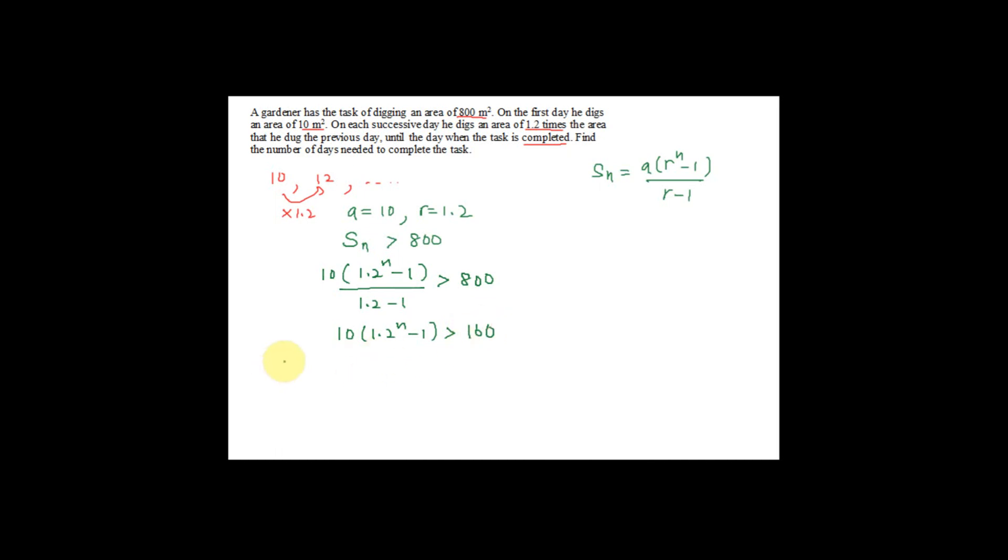So remember here you cannot multiply 10 with 1.2 power n. A lot of students are going to make a mistake like that, that is 10 multiply by 1.2 power n. This is not equal to 10 multiply with 1.2, which is 12 power n. This is wrong.